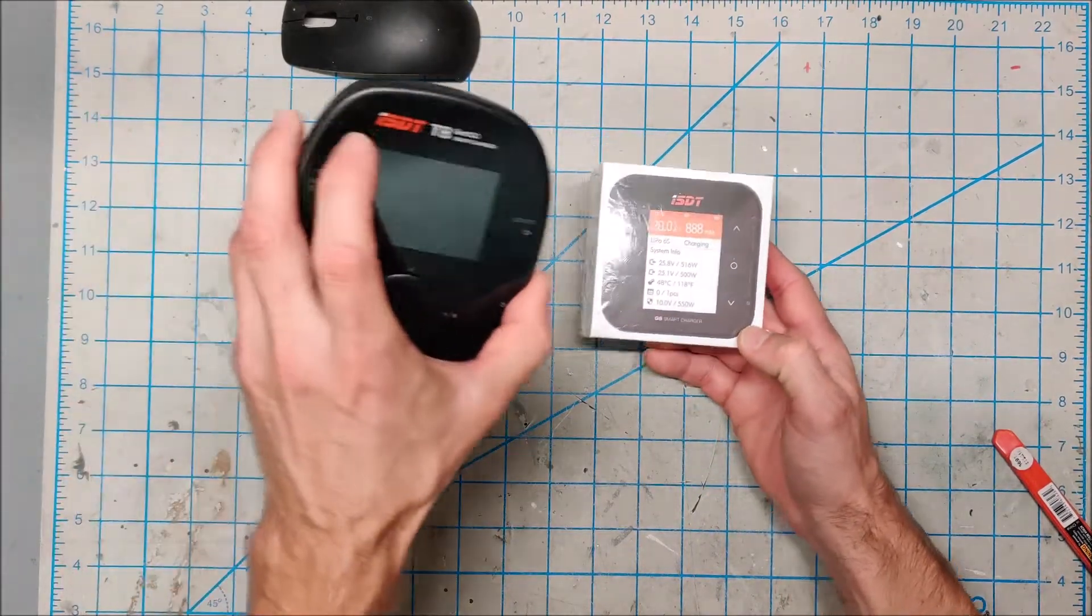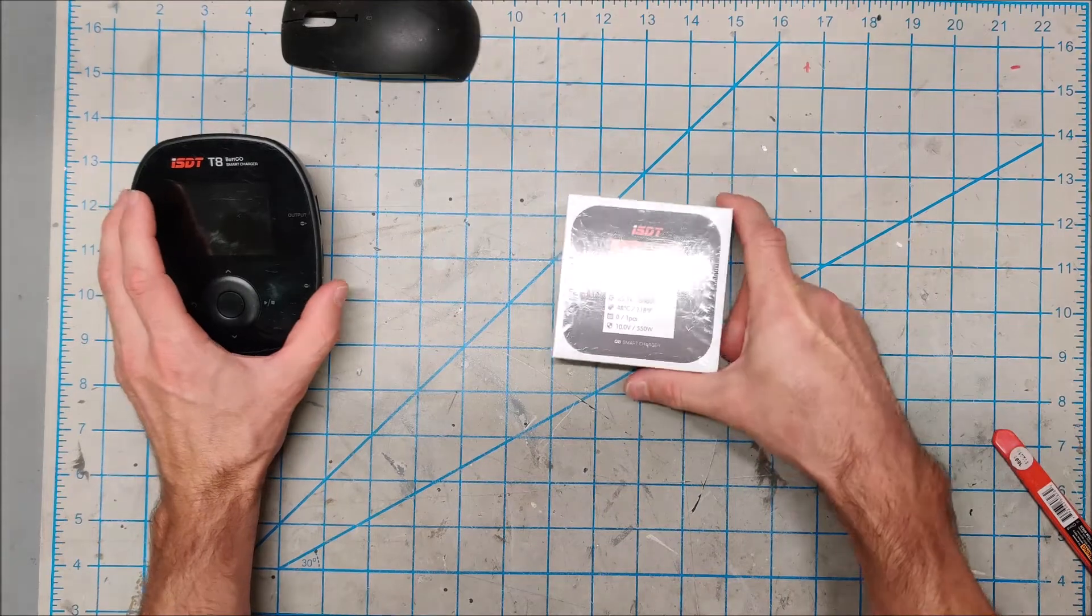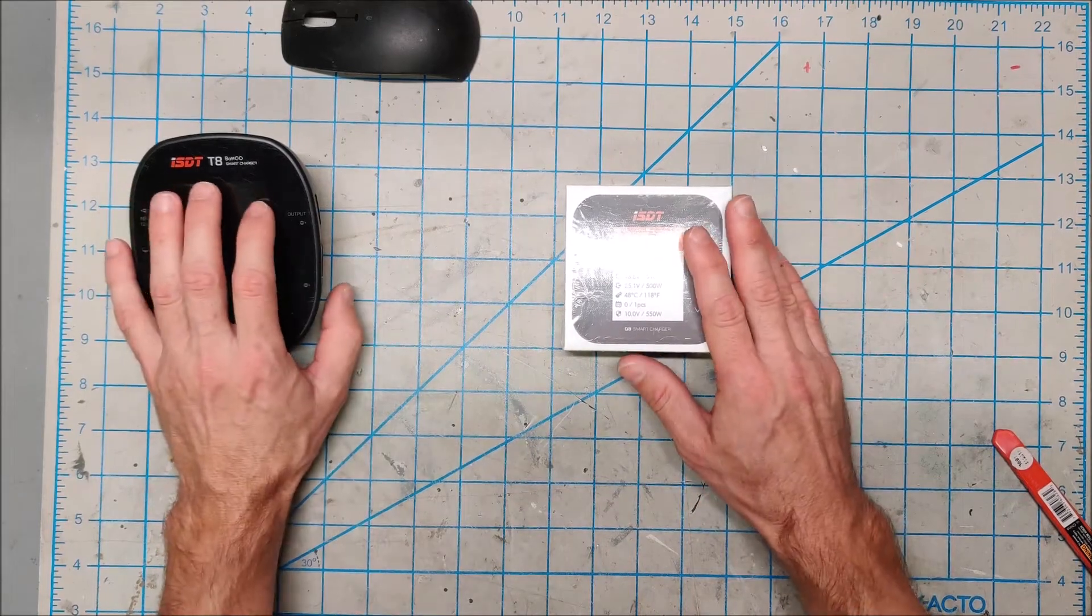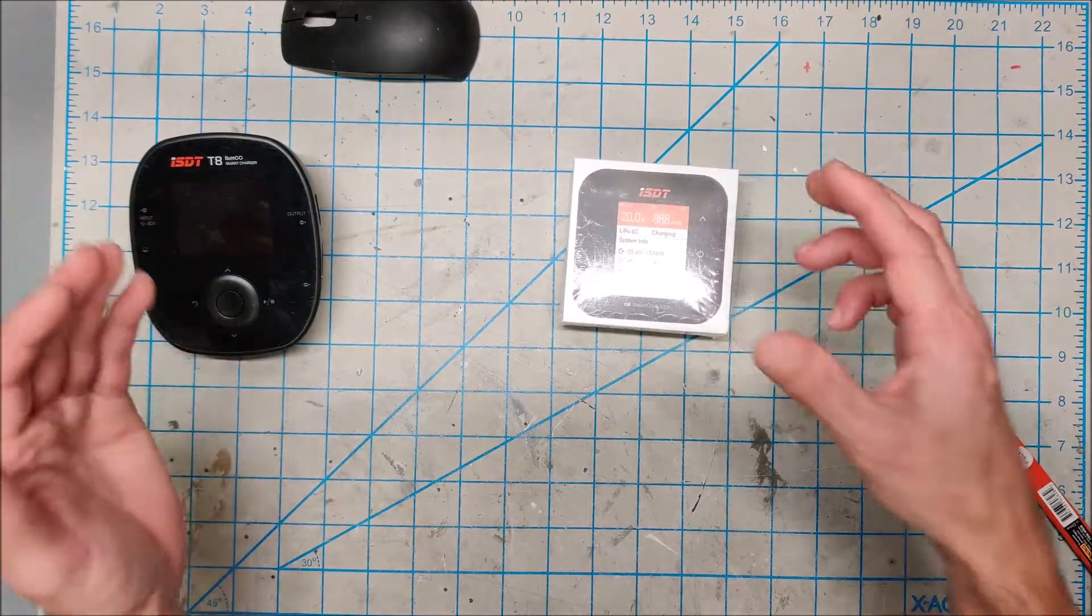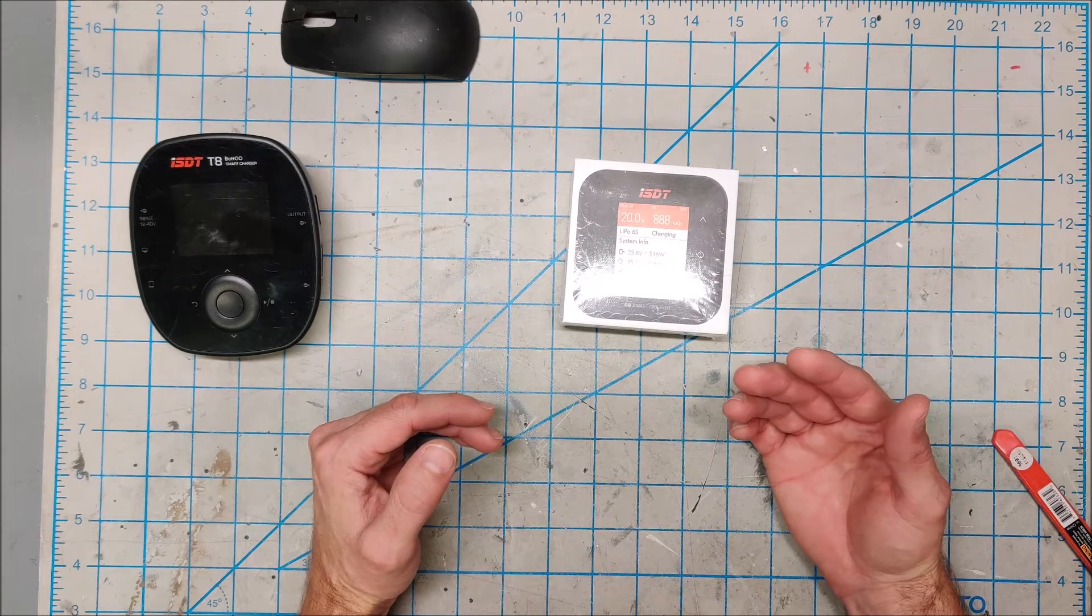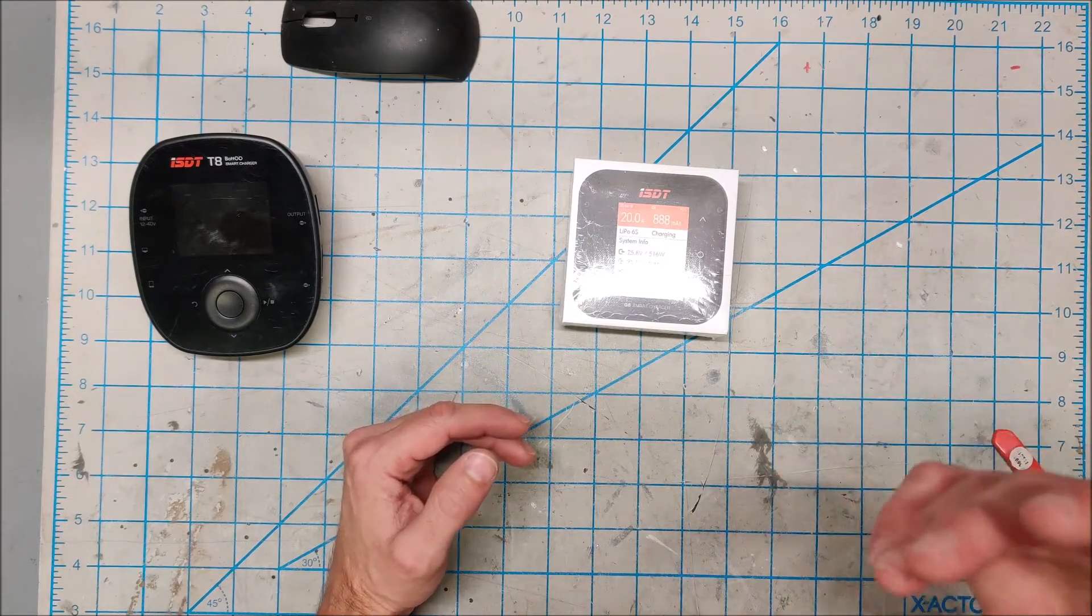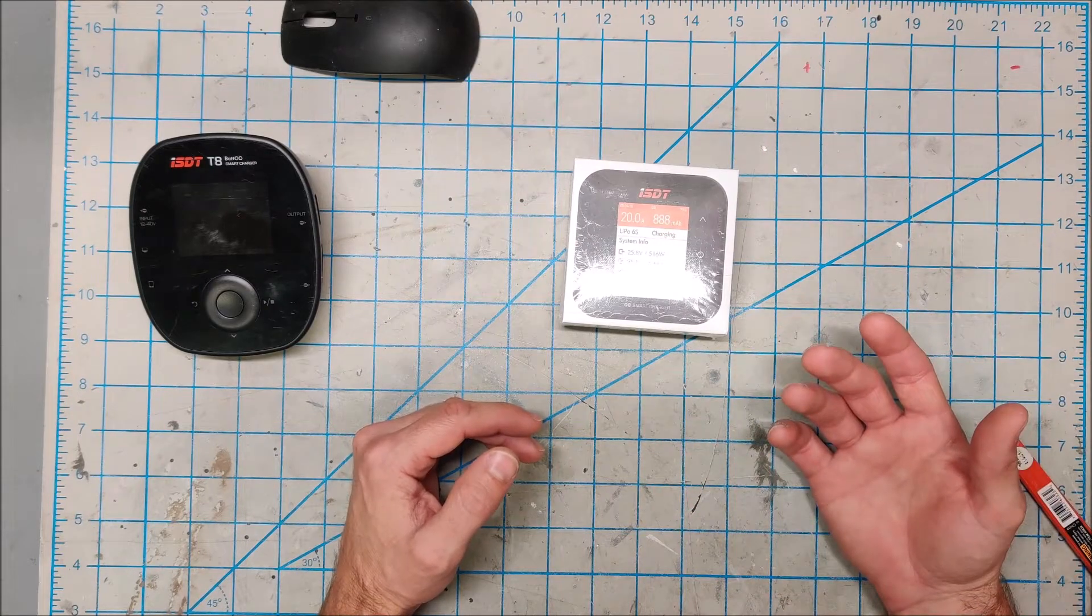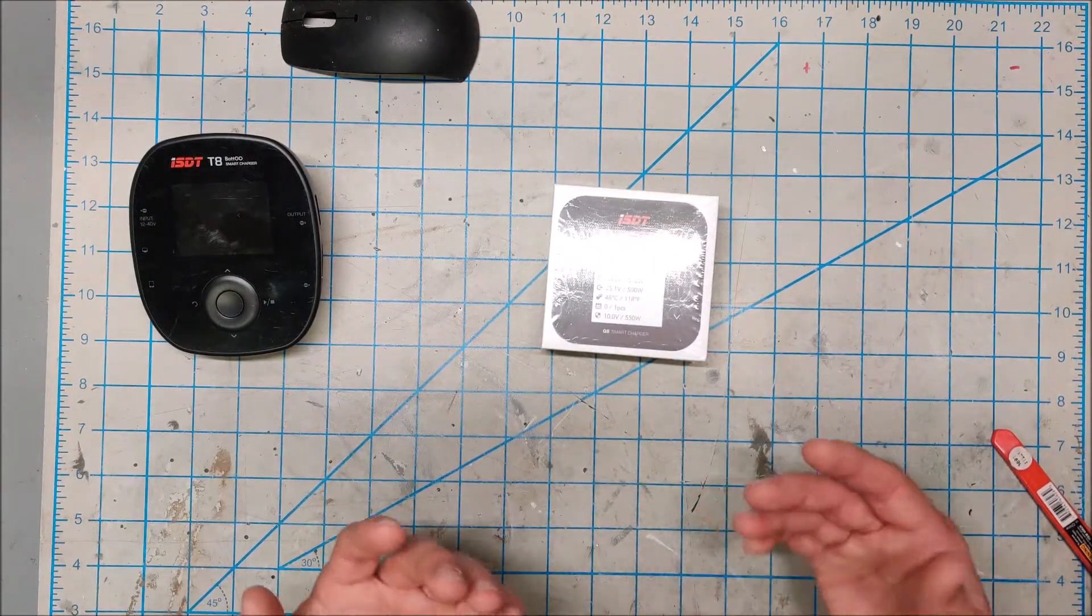Now, you should know that they make the T6 and the Q6. Don't get the T6 or the Q6. The 6 and the 8 represents how many cells in series it can handle. So, the T6 and the Q6 are rated for a 6S battery. If you do power walls or e-bikes, you are never going to use a 6 series battery. The smallest battery you're going to do is probably a 24 volt battery, which is a 7S. So, please get the Q8 or the T8. Don't get any of the 6 series chargers.